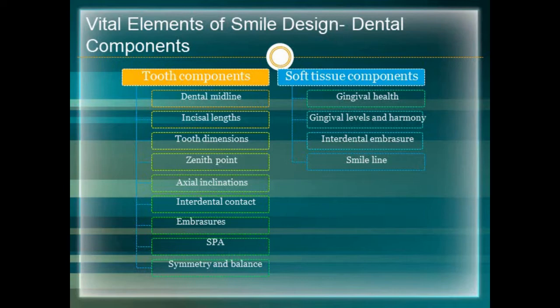The tooth components are: dental midline, incisal length or incisal edge position, tooth dimensions, zenith points, axial inclination, interdental contact point as well as interdental contact area, the embrasures SPA (sex, personality and age), and symmetry and balance. Under soft tissue components come gingival health, gingival levels and harmony, interdental embrasures, and smile line.